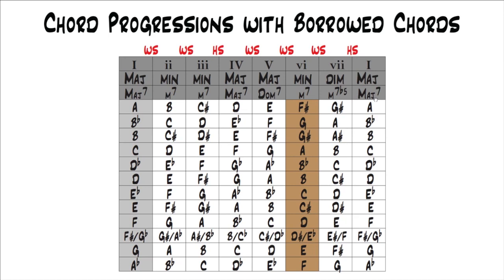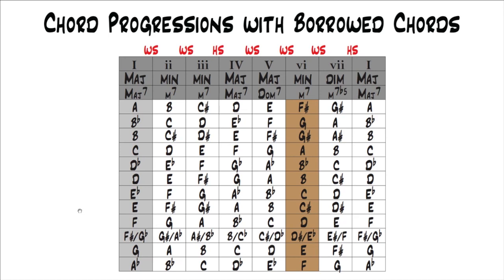We're going to talk about chord progressions again. All the chord progressions we talked about up to this point have been diatonic to one key — meaning if it was in the key of C, every chord would have been in the key of C. In these next few lessons, we're actually going to talk about chord progressions that borrow chords from other keys or actually change keys. Although a lot of music is written in one key, there are even popular songs that borrow chords or change keys, especially in more advanced music.